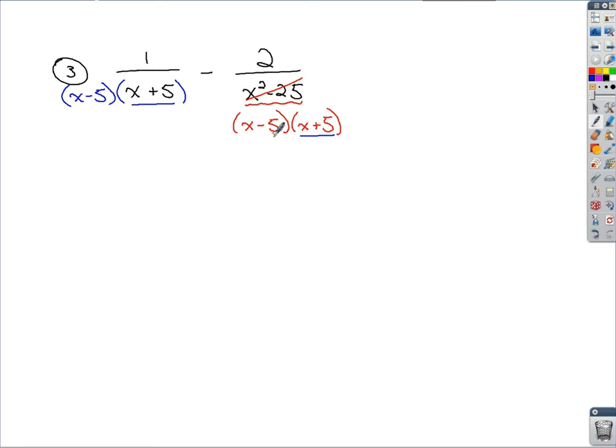Just like we did on the previous problem, whenever you do the bottom, you also do the top. And now we know our least common denominator will be that x minus 5 times x plus 5. I could set up one big fraction.